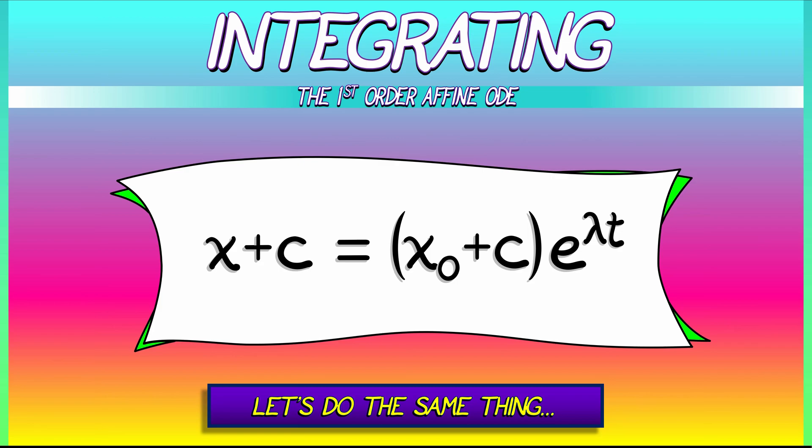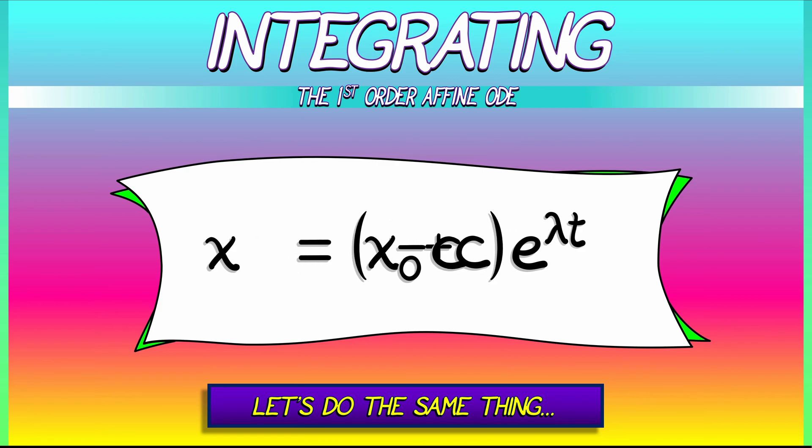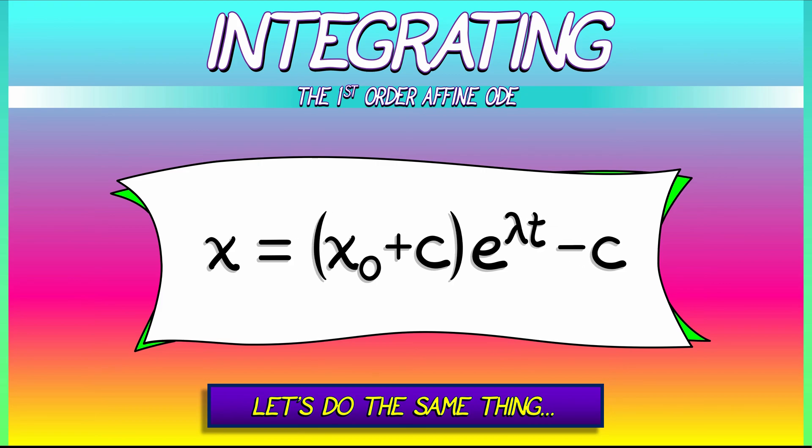Moving that little c over to the right-hand side, we get a final answer. x as a function of t equals quantity x naught plus c times e to the lambda t minus little c. And that's it. That's our solution.